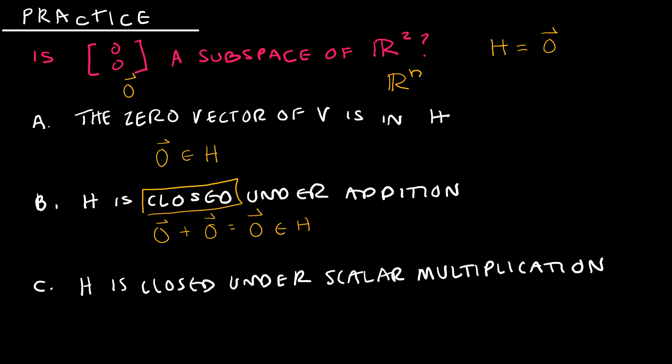H is closed under scalar multiplication. If I take C, any C, times the zero vector, I will get the zero vector. And we already know the zero vector is in H. Therefore, yes, this is true not only for this particular vector (0, 0), the zero vector for R2, but really for any Rn.